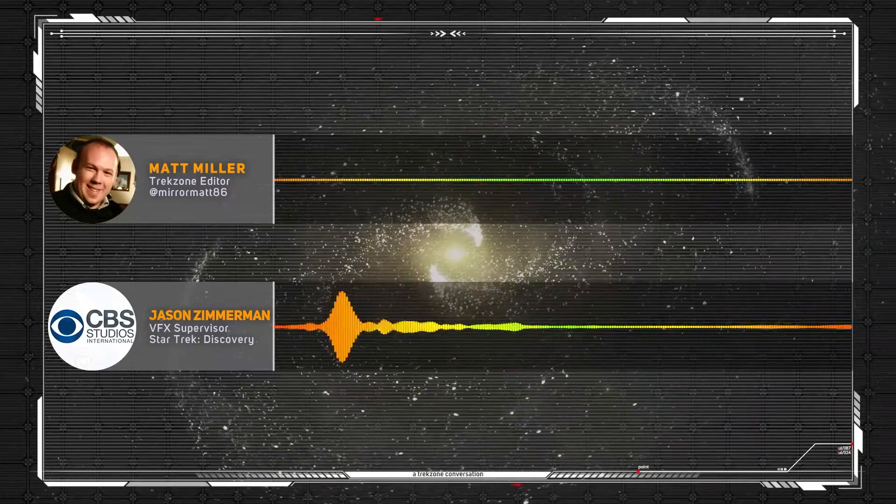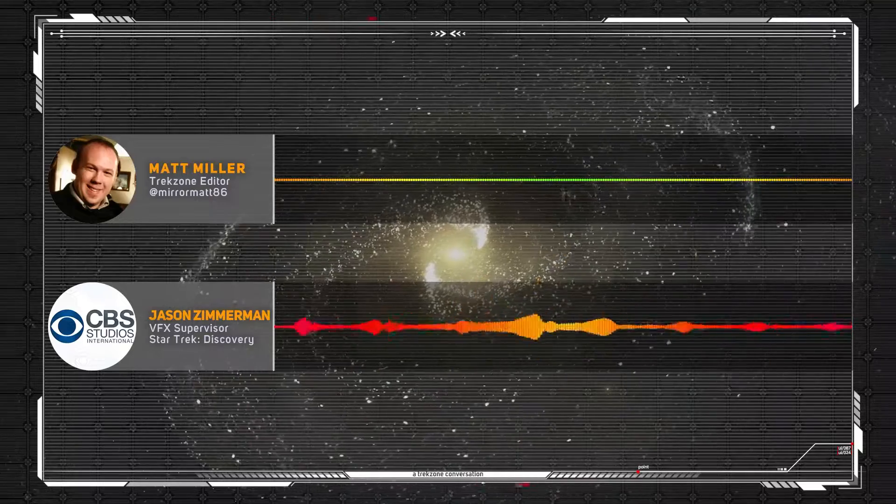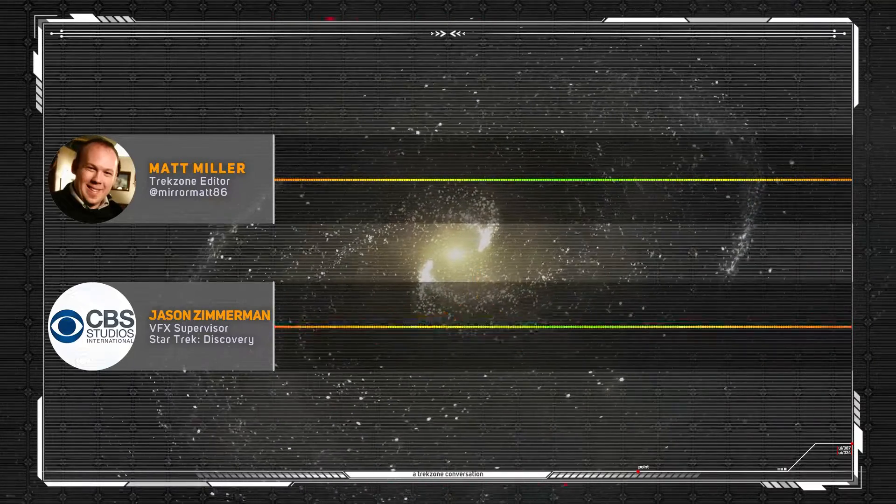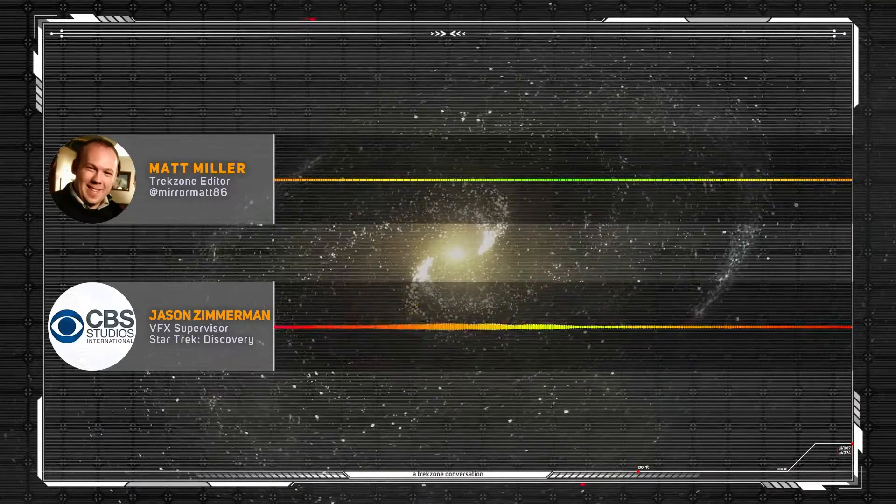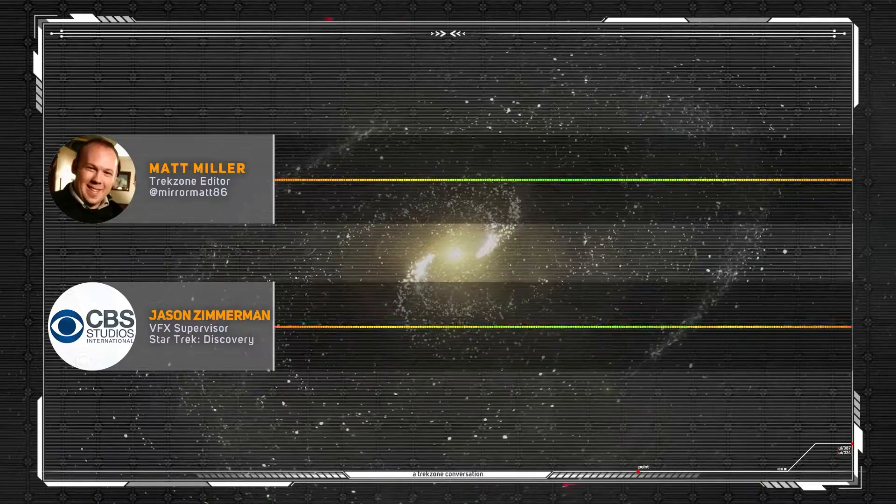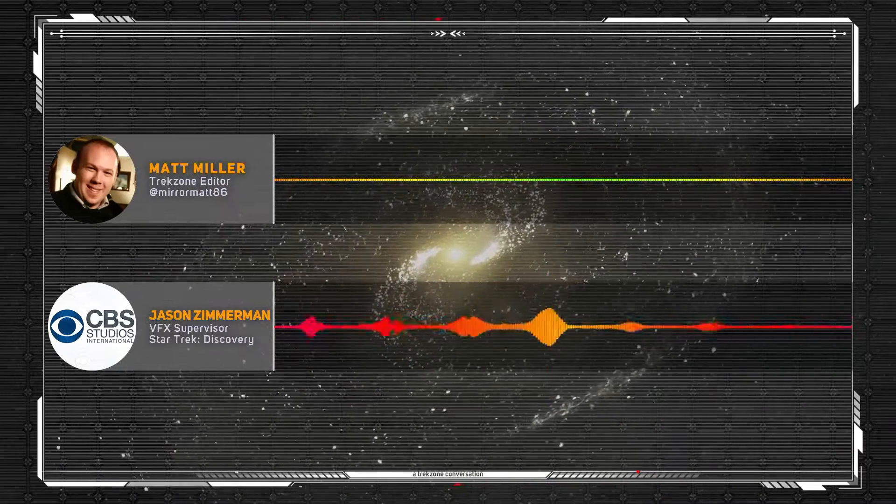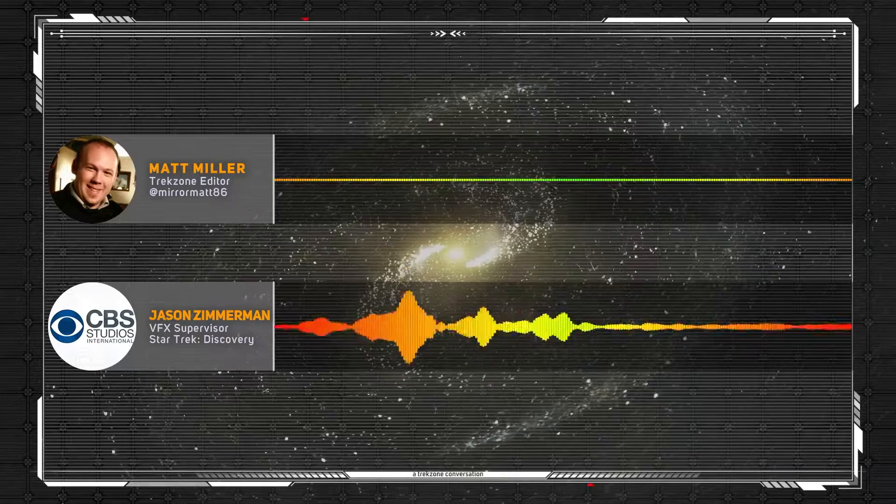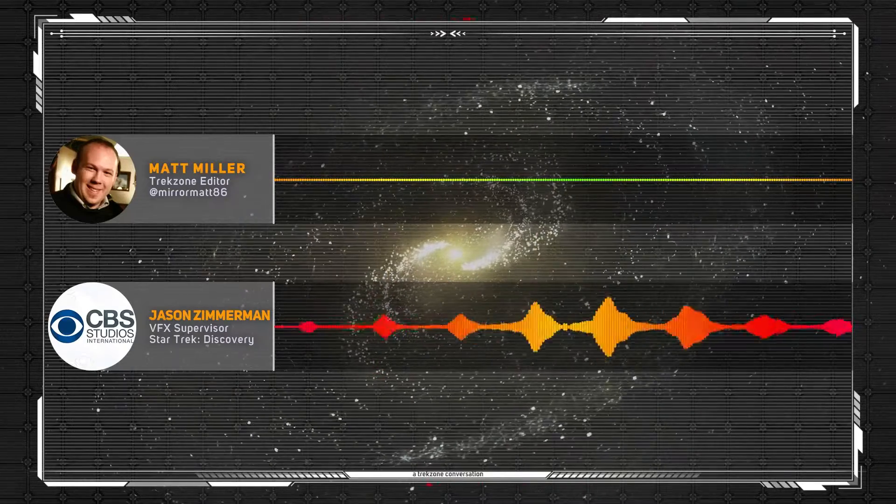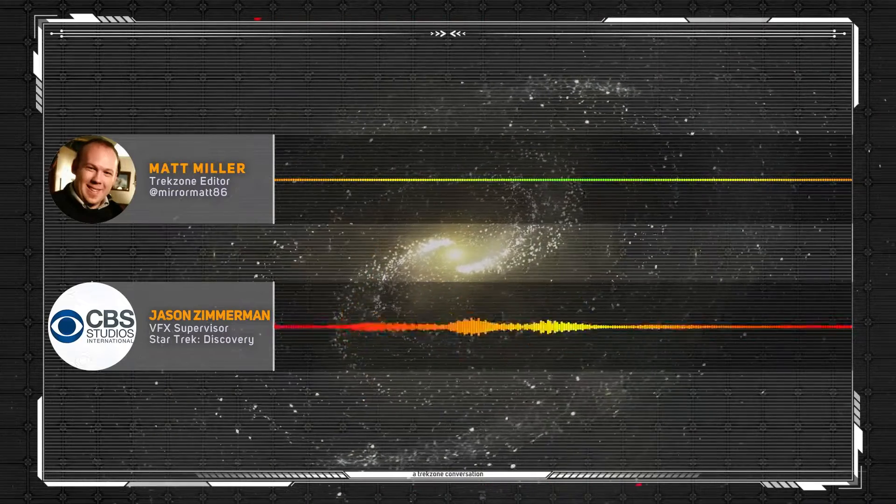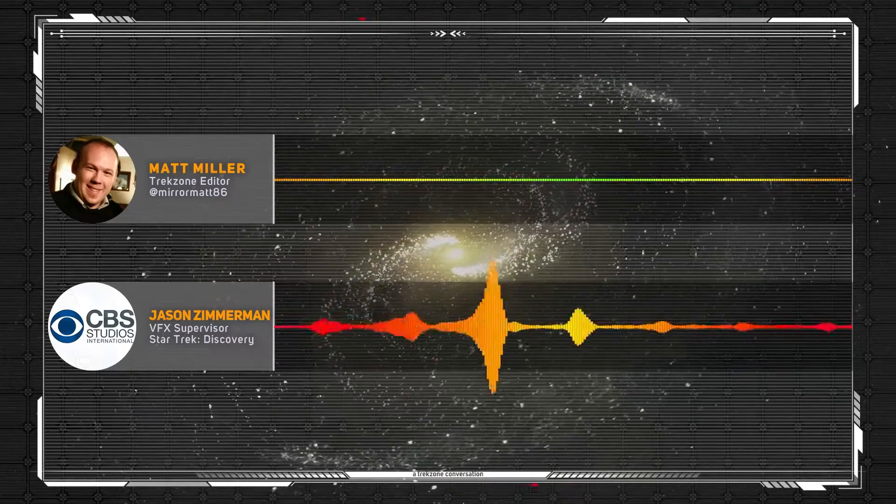One thing that we did do is we built sort of a battlefield diagram very early on that sort of defined how the Discovery and Enterprise would be surrounded, where the Section 31 ships would show up, how they would surround them, where the drones would sort of occupy, where the battlefield was. So we kind of had an idea, this basic layout of, okay, here's where things are.